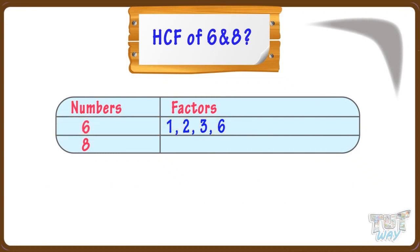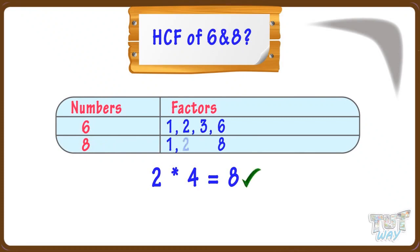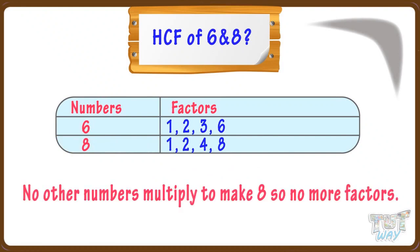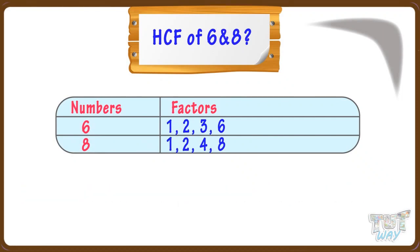Now let's find the factors of 8. 1 × 8 = 8, so 1 and 8 are factors of 8. 2 × 4 = 8, so 2 and 4 are factors of 8. No other numbers multiply to make 8, so no more factors. Hence, 1, 2, 4, and 8 are factors of 8.